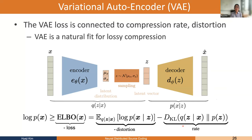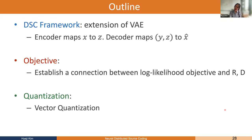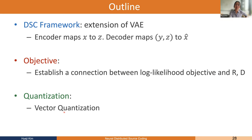I'm now ready to talk about our approach in neural distributed source coding. Let me first acknowledge my collaborators: Jay Wang, Elliot, and Anish are UT students; Alexi Macias is my colleague at UT. Here is the outline: I'll first talk about how we frame the encoder for learning DSC, extending the VAE. Then I'll establish a connection between the log-likelihood objective and the rate-distortion for the distributed source coding setup. Finally, I'll discuss how we handle quantization to obtain discrete latent representations.